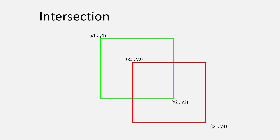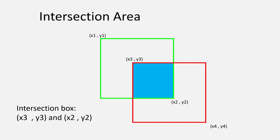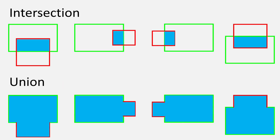Let's derive a formula. Assume the green ground truth box has top-left corner x1, y1 and bottom-right x2, y2. The red predicted bounding box has top-left x3, y3 and bottom-right x4, y4. The intersection is the blue box region. For a simple case, the top-left of the intersection would be x3, y3 from the red box, and the bottom-right would be x2, y2 from the green box.